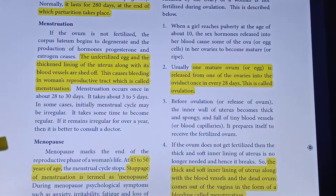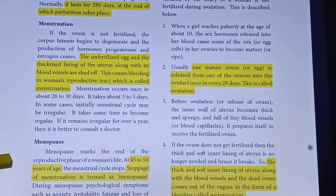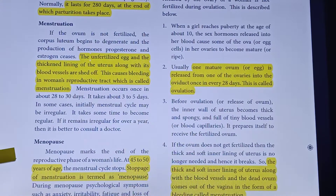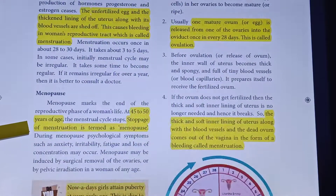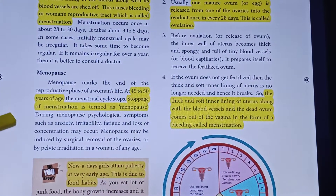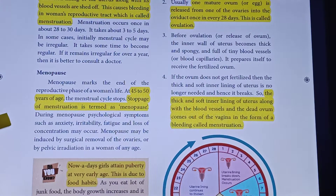The next stage is menopause. At a particular age, periods stop — at 45 to 50 years, there is a stoppage of menstruation, which is called menopause. During menopause, psychological symptoms such as anxiety, irritability, fatigue, and loss of concentration may occur.